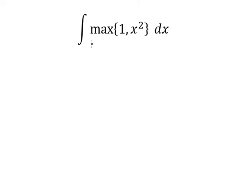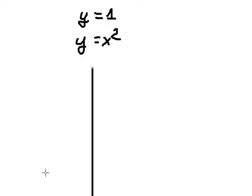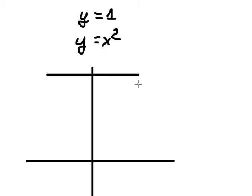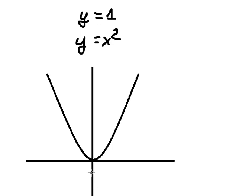The first thing to calculate about this one, we need to graph y equals to 1 and y equals to x squared. So the graph of y equals to x squared should be like this, and y equals to 1, the graph should be like this.